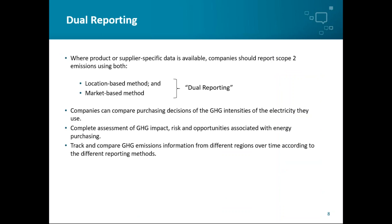In regions where the market-based method can be applied, the GHG protocol states that companies should report both their location-based and market-based emissions — this is known as dual reporting. There are several benefits: companies can compare the GHG intensity of the electricity they're using based on purchasing decisions, carry out a complete assessment of GHG impact, risks, and opportunities associated with energy purchasing, and track and compare GHG emission information from different regions over time. The key point is that the GHG protocol requires dual reporting where it's applicable. If you aren't carrying out dual reporting where market-based options are available, you're not in compliance with the GHG protocol corporate standard.